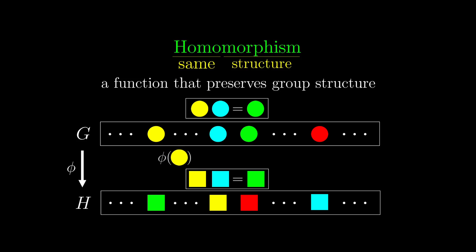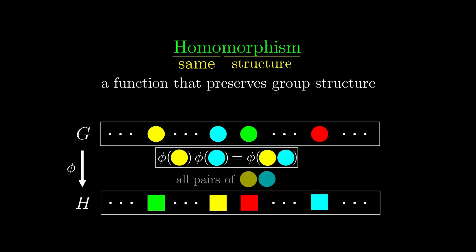To put it more succinctly, the yellow square is actually the image of the yellow circle under the map phi. Similarly, for the blue square and the green one. However, because of how yellow, blue, and green circles are related to each other, we can replace the green circle with this. Basically, if this relation holds for all pairs of elements in the group G, then phi is the homomorphism.